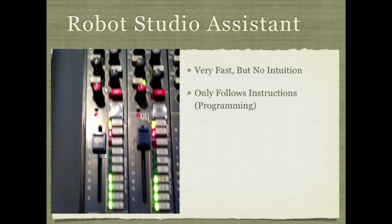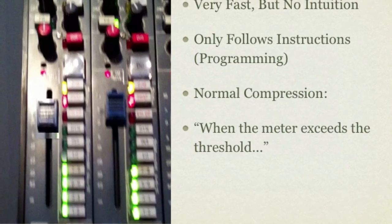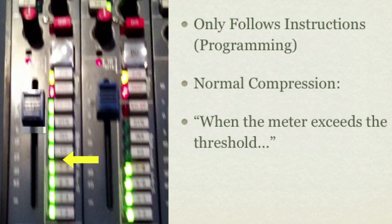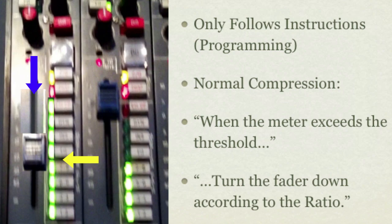Let's use compression as an example, since it's by far the most common. With normal compression, you're telling your robot assistant: okay, watch this meter, and whenever it goes above the threshold, turn down the fader according to the ratio.